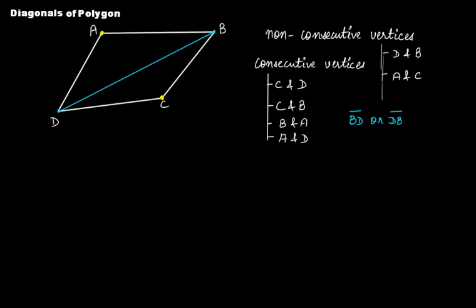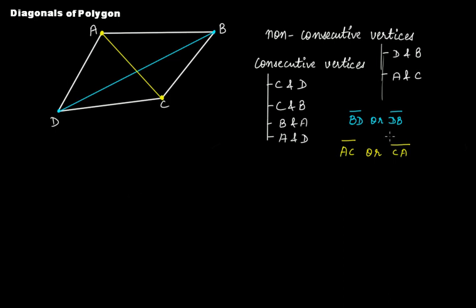This is one diagonal, and another one is the line segment AC or CA of this quadrilateral. So in all quadrilaterals — whether it is a rectangle, a square, a parallelogram, a rhombus, a trapezium, or a kite — all quadrilaterals have two diagonals.